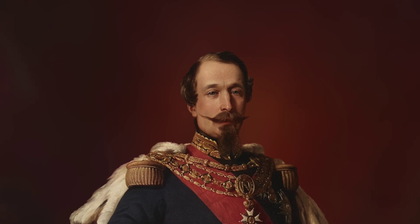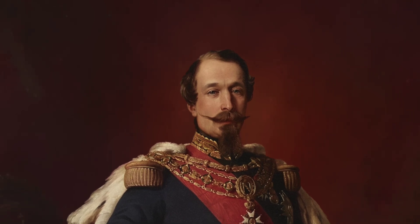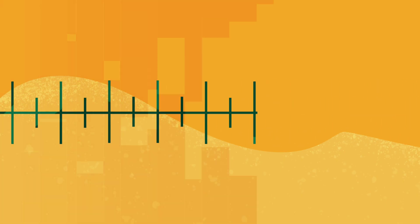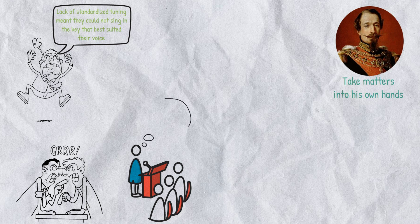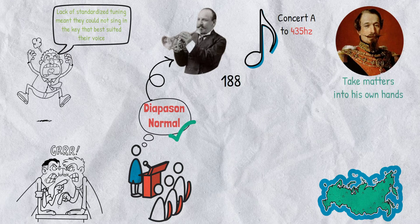That's when Napoleon III decided to take matters into his own hands. He decreed a new standardized tuning in 1859 by the name of Diapason Normale, based on the tuning done by a man named Jules Levy. That tuning set our concert A to 435 hertz. By the late 1800s, most European countries had adopted the French Diapason Normale.